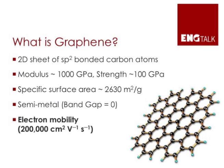The carbon-carbon bonding is one of the strongest in nature, so you get very high modulus and very high strength. The surface area is very large because every atom is a surface atom. It's a semi-metal with zero band gap. Electrons are very mobile in graphene — I've bolded this because it's only true if a graphene sheet is freestanding. If you put it on a substrate, you start seeing scattering from the substrate and these numbers go down.